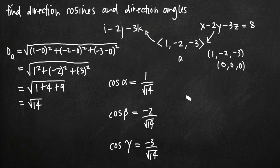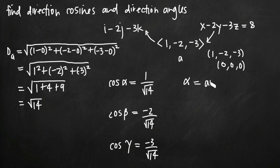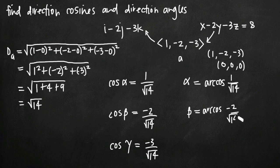To find the direction angles, we simply solve for alpha, beta, and epsilon by taking the inverse cosine (arc cosine) of both sides, which cancels the cosine on the left and leaves us with the angle. So alpha equals arc cos of 1 over the square root of 14, beta equals arc cos of negative 2 over root 14, and epsilon equals arc cos of negative 3 over root 14.